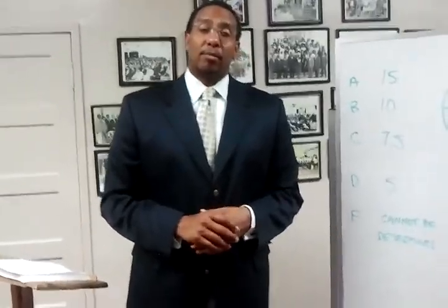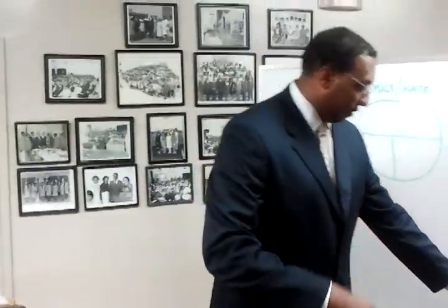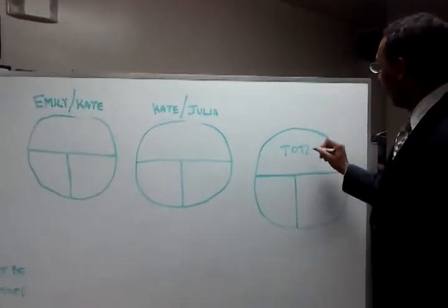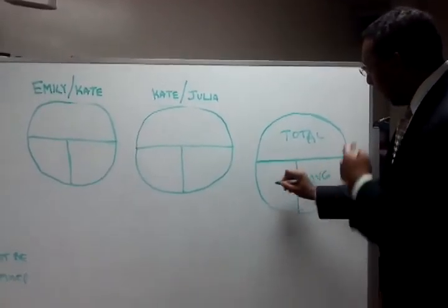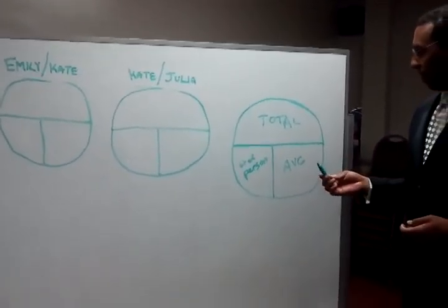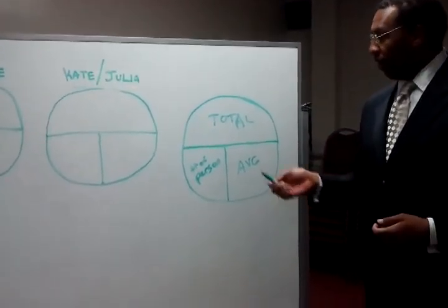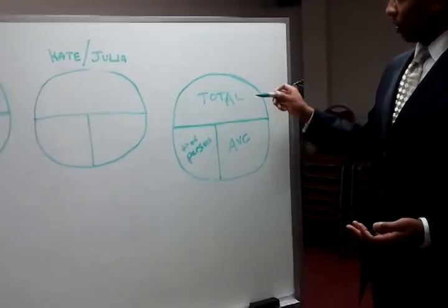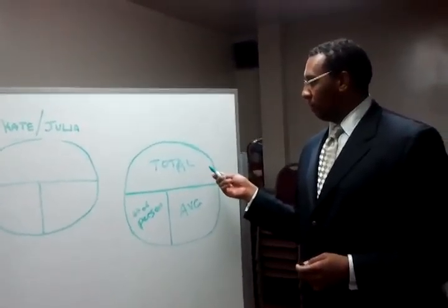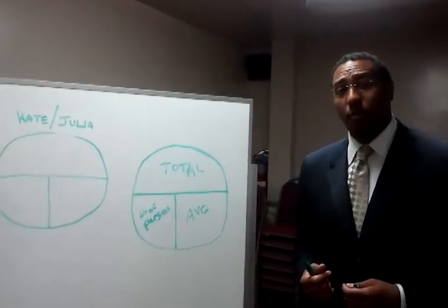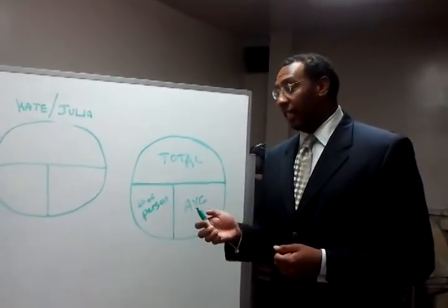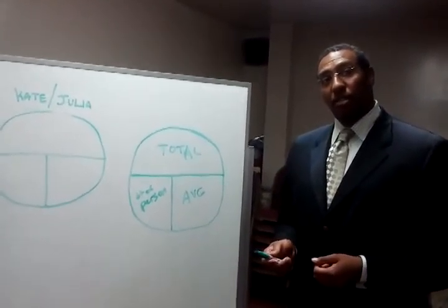In order to solve problems regarding averages, we'd like to use this pie chart. This chart shows the relationship between the total number of people involved, the average, and the number of items or people. You take the number of people and multiply by the average to get the total. You take the total and divide by the number of people to get your average. Or you can take the total and divide by your average to get the number of people. They work hand in hand. So we're going to apply this to the information we know — what was given, what they're trying to find out, and what order of operations to use. They've given us the average and we know the number of persons, so we're going to fill that information in.